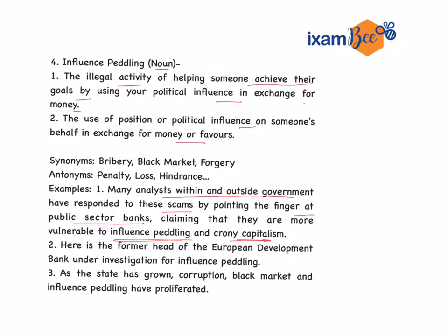This is a related article — without political influence, this kind of rule-breaking is not possible, or political influence plays a very big role. Another example: the former head of the European Development Bank is under investigation for influence peddling. As the state has grown, corruption, black market and influence peddling have proliferated. Synonyms: bribery, black market forgery. Antonym: penalty, loss and hindrance.